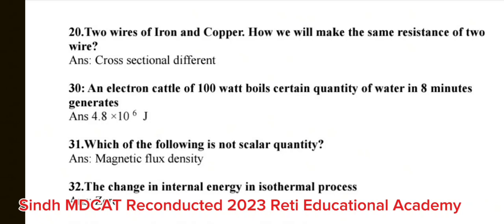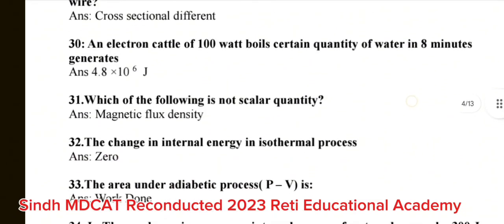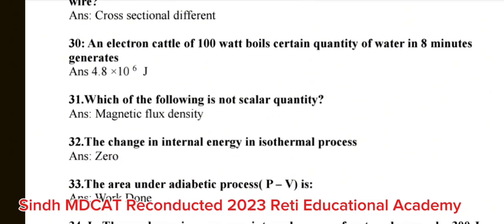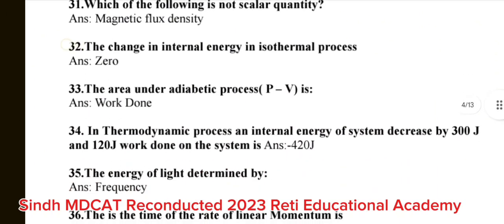Question number 30: An electron kettle of 100 Watt boil a certain quantity of water in 8 minutes generate? The correct answer is 4.8 into 10 power 6 Joule. Question number 31: Which of the following is not scalar quantity? The correct answer is magnetic flux density. Question number 32: The change in internal energy in isothermal process? The correct answer is 0. Question number 33: The area and adiabatic process P to V is? The correct answer is work done.